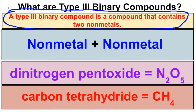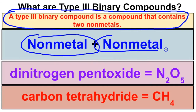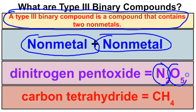When we talked about type 1 and type 2 binary ionic compounds, you had a metal bonded to a non-metal. With type 3 binary compounds, you have a non-metal bonded to a non-metal. For example, dinitrogen pentoxide has nitrogen bonded to oxygen — both non-metals. Carbon tetrahydride (CH4) also has carbon, a non-metal, bonded to hydrogen, another non-metal. So anytime you have a type 3 binary compound, it consists of only two different elements, both of which are non-metals.